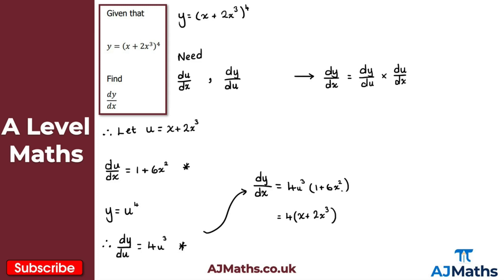Substituting back, dy/dx equals 4(x + 2x³)³ multiplied by (1 + 6x²). Don't forget the power of 3 — it's very easy to miss when you have two similar-looking powers. And there we have it, that's dy/dx for question 1.